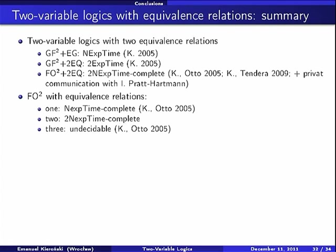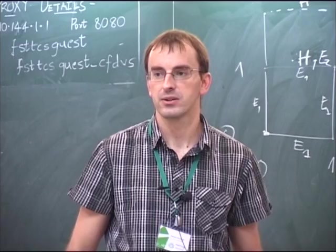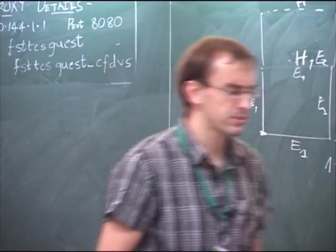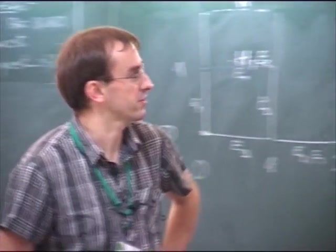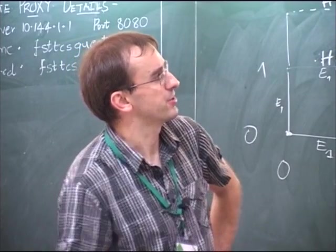It appears that it is in two-exp time. The reason for this is that in this language, we cannot say that a class is realized, a type of a class is realized exactly once, for example. This simplifies things and allows to build tree-like models, in fact. Tree-like unravelings. And allows to use, for example, we can use alternating Turing machines to check existence of such models working in exponential space.